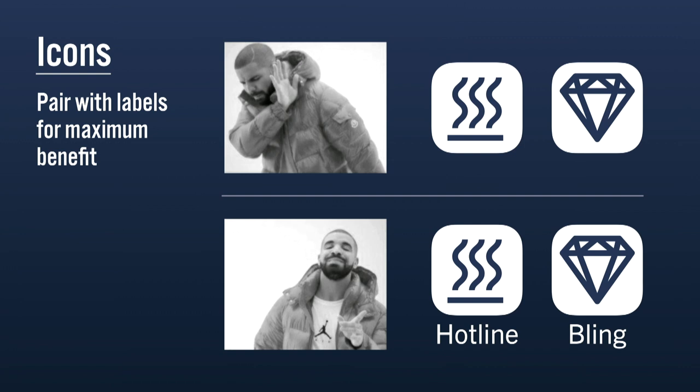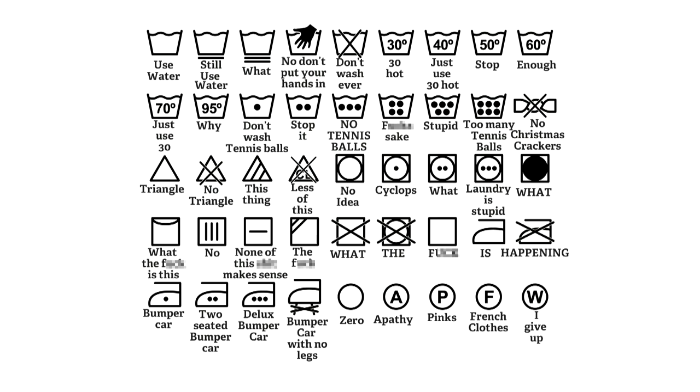Avoid using the same color for links as body copy — it doesn't send enough of a signal. Similarly, be careful using blue for headers and captions if those elements aren't clickable, since we're so primed to expect blue means link. For icons, always pair them with labels for maximum benefit — there are very few ideas that can be perfectly summarized by a small icon. Including a label reduces ambiguity so people understand what a control does, while as users learn your interface they'll start recognizing icons and work faster.